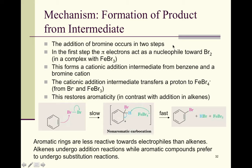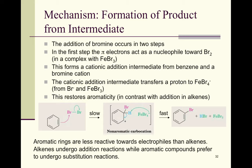Now we have a more detailed mechanism. The formation of the product comes from an intermediate. Using bromine as our example — same mechanism for chlorine — we look at the addition of bromine in two steps. In the first step, the pi electrons of benzene attack the bromine, and the pair of electrons holding the bromine together go to Br, making Br minus. The benzene ring is the nucleophile, bromine is the electrophile. This carbocation intermediate is no longer aromatic.